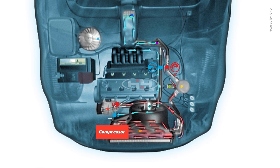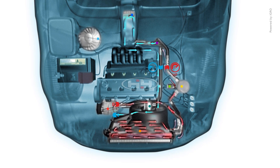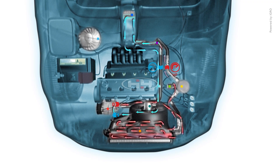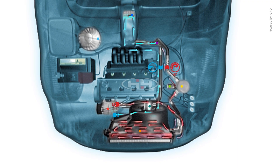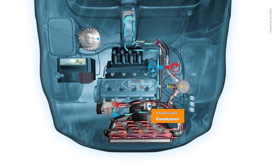The compressor creates the flow of refrigerant through the air conditioning system. The gas is then compressed, which adds additional heat, and the high temperature, high pressure gas is then forced from the compressor discharge port to the condenser.